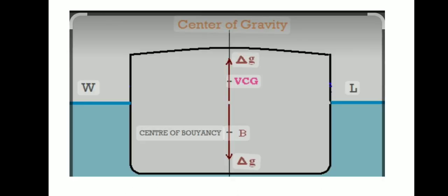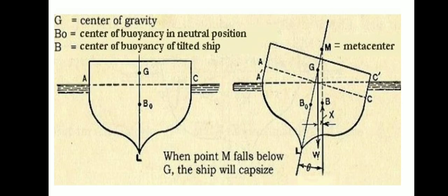Here we have shown the center of gravity of the vessel and the center of buoyancy B. Here we show the metacenter. Metacenter is the line drawn through the center of buoyancy of a floating vessel and the corresponding line drawn through when the vessel's center of buoyancy has been tilted.